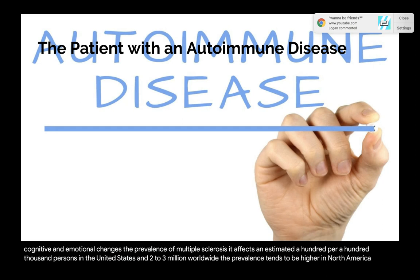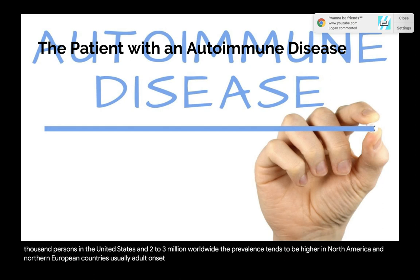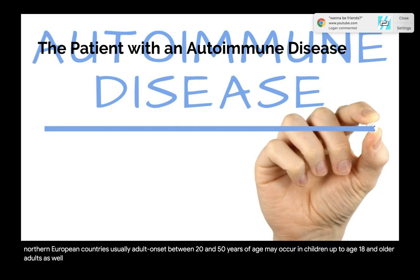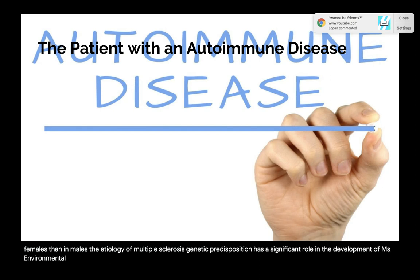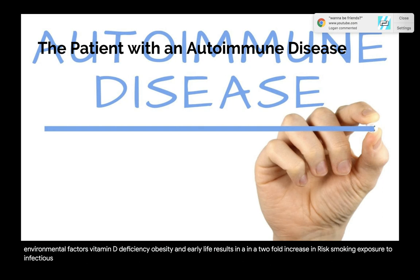The prevalence of MS tends to be higher in North American and northern European countries. It usually has adult onset between 20 and 50 years of age, though it may occur in children and older adults. Prevalence is higher among Caucasians; however, in Hispanic and Black Americans with MS, the disease tends to regress faster. Higher incidence in females than in males. Genetic predisposition plays a significant role. Environmental factors include vitamin D deficiency, obesity, and early life exposures, which result in a two-fold increase in risk, as well as smoking and exposure to infectious agents.